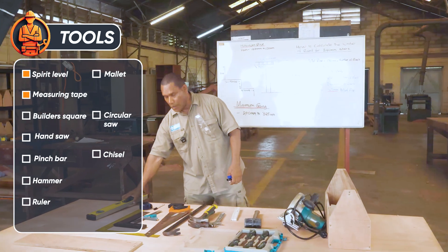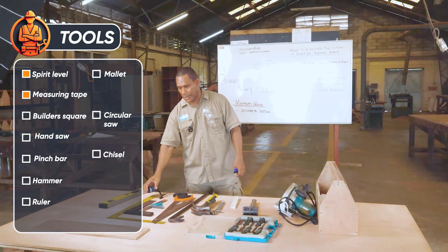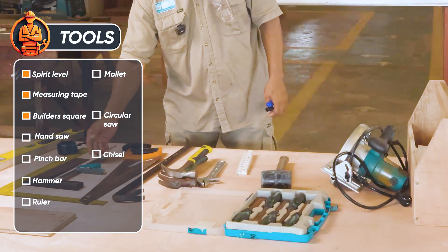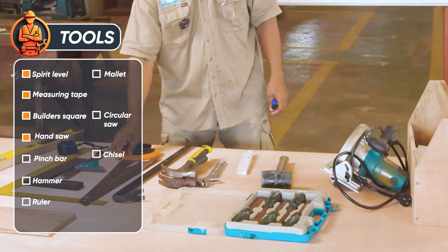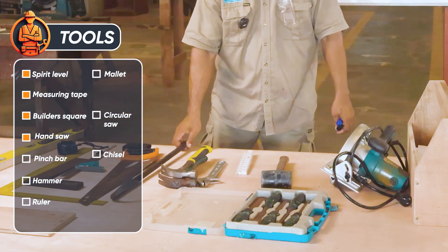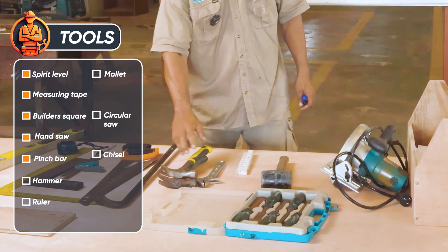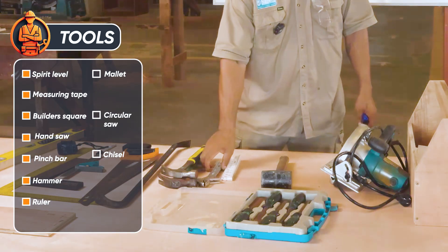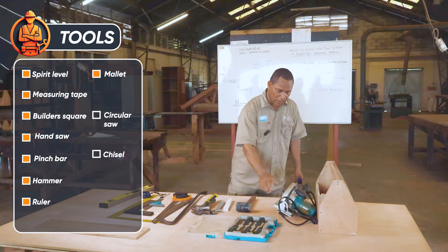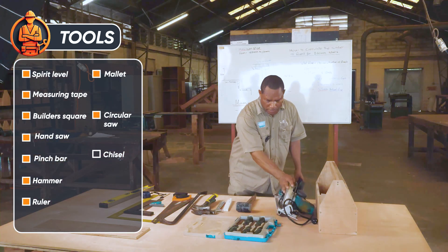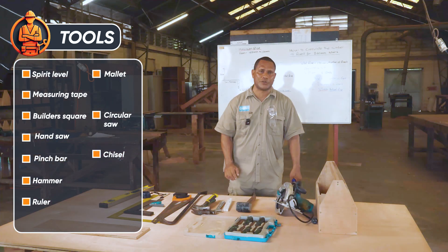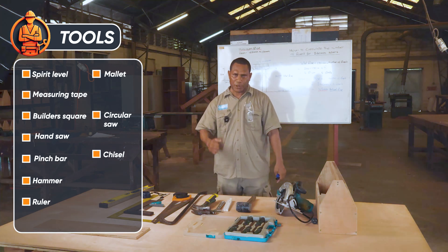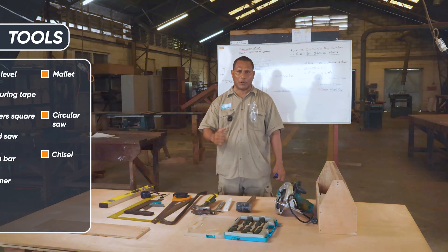Now, before you start working with the stringer, the basic tools you will need are: spirit level, tape measure, builder's square, small square, hand saw, crowbar, hammer, ruler, mallet, circular saw, and chisel. Those are the basic tools you are going to need before you start working with the stringer.